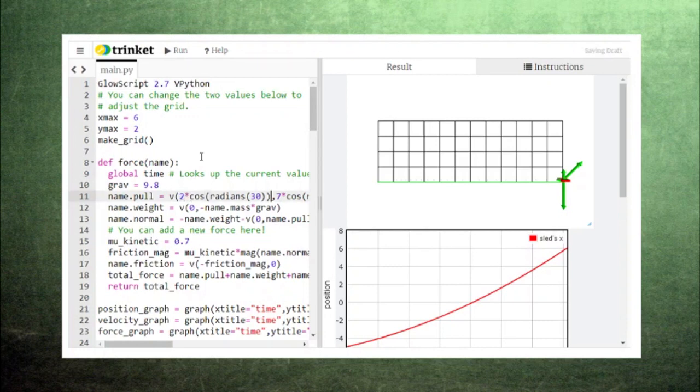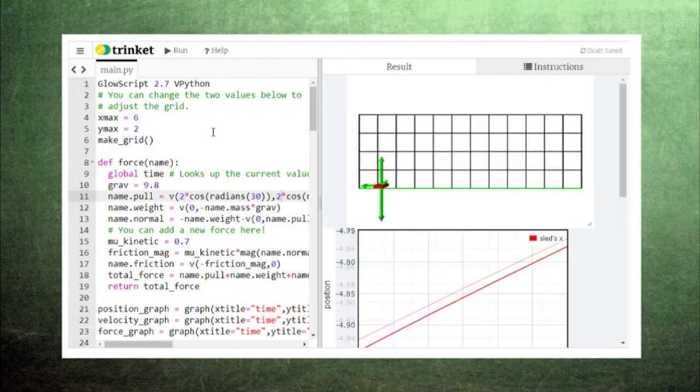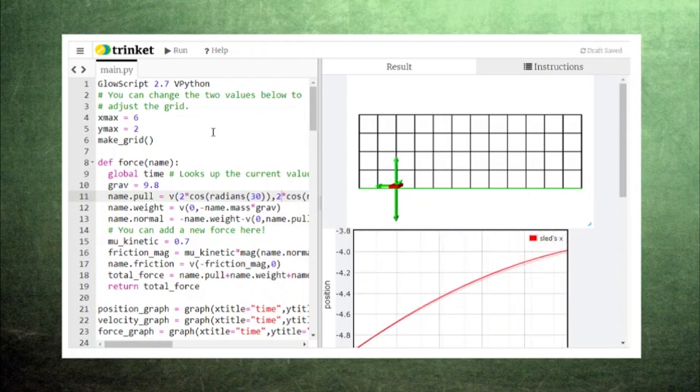If, on the other hand, we decrease the magnitude of the pulling force, we could end up with friction overpowering the horizontal component of the pulling force, and the sled will slow down.